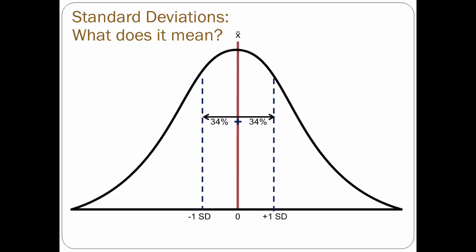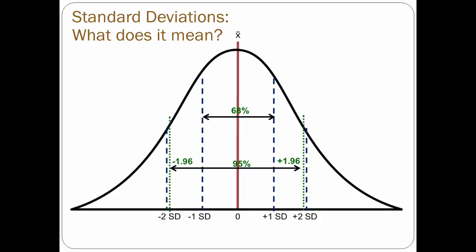Added together, this means there is a 68% probability that a score is within one standard deviation of the mean. The same principle applies to two standard deviations — there is about a 95% probability that a score lies within two standard deviations of the mean. To be precise, the 95% probability is that a score is within 1.96 standard deviations of the mean. And for three standard deviations, which encompasses virtually all scores in a normal distribution.